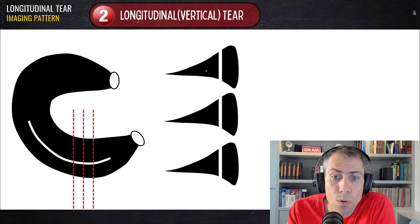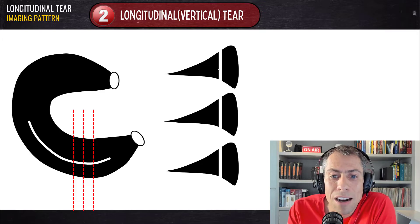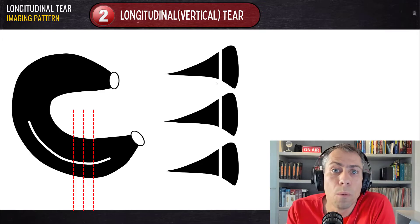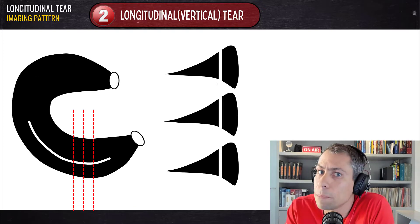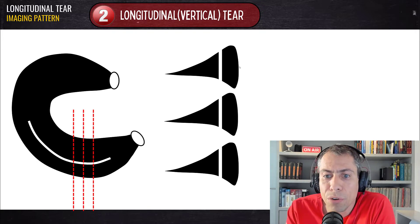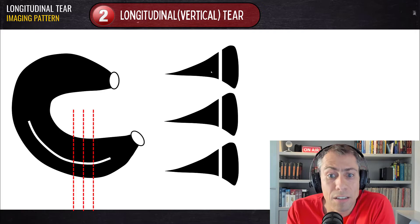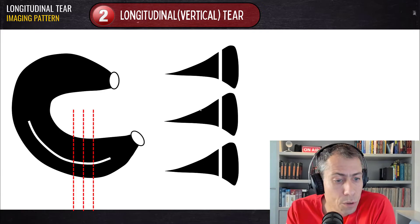If the tear moves toward the inner portion across slices, that is a marching cleft sign, which is a sign of an oblique tear — a parrot beak tear — and that's another thing I'll cover in another video. But for the longitudinal vertical tear, the distance between the tear and both the periphery and the inner portion of the meniscus remains the same across different slices in the short axis. Keep that in mind — it's important to understand.